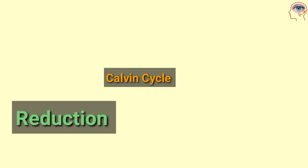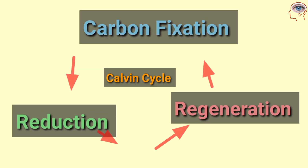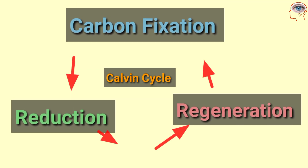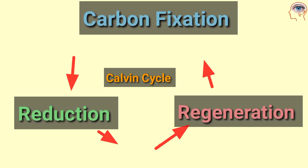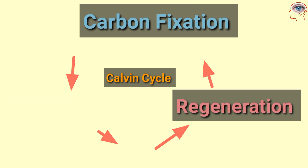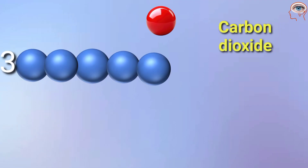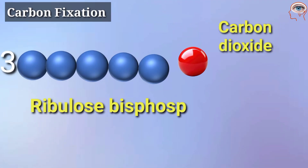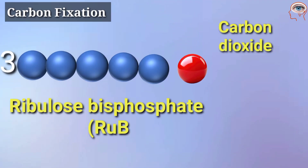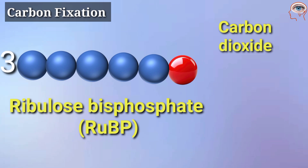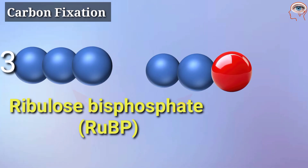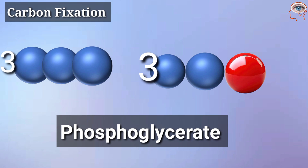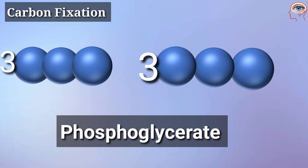The Calvin cycle is divided into three main stages: carbon fixation, reduction, and regeneration. In the first step, carbon dioxide joins with a 5-carbon compound called RuBP to form a temporary 6-carbon compound that breaks into a 3-carbon compound of phosphoglycerate with the help of an enzyme. This step is called carbon fixation.